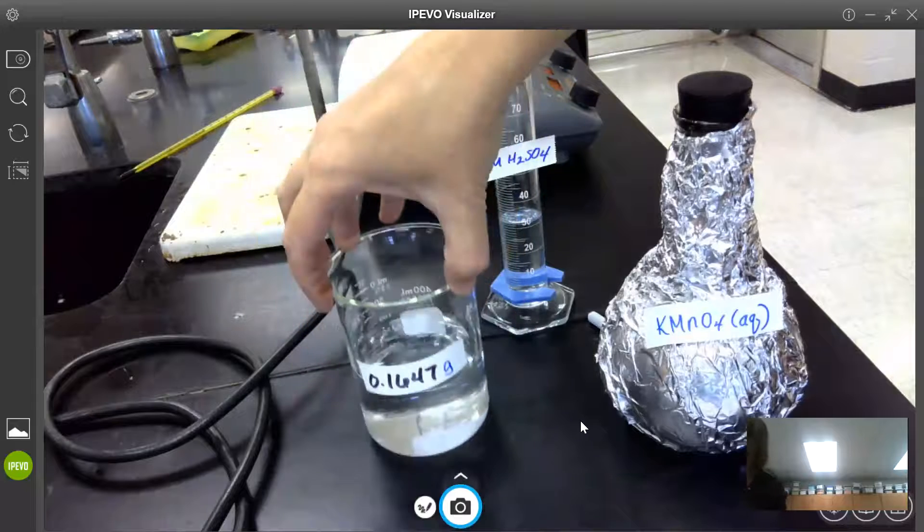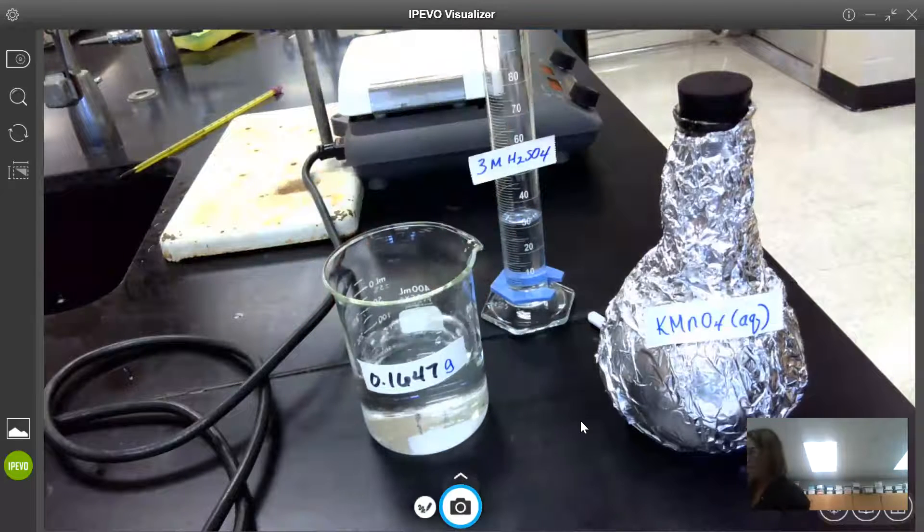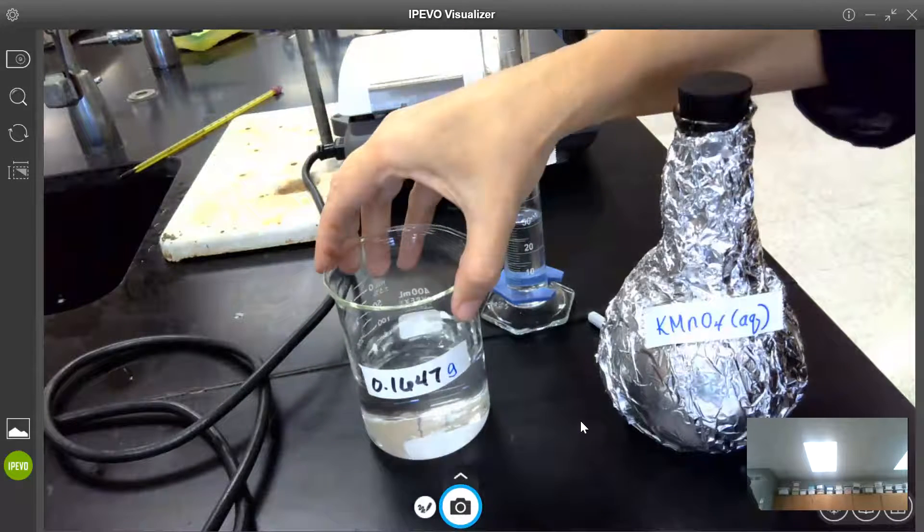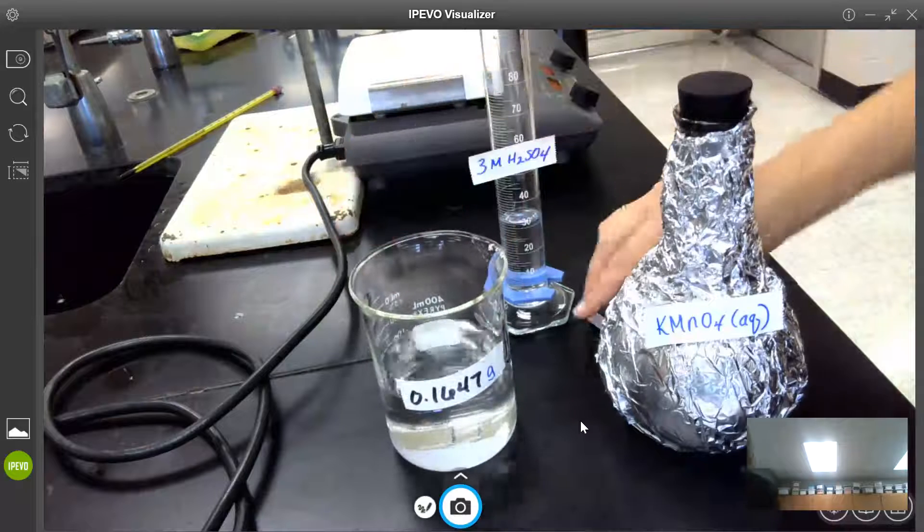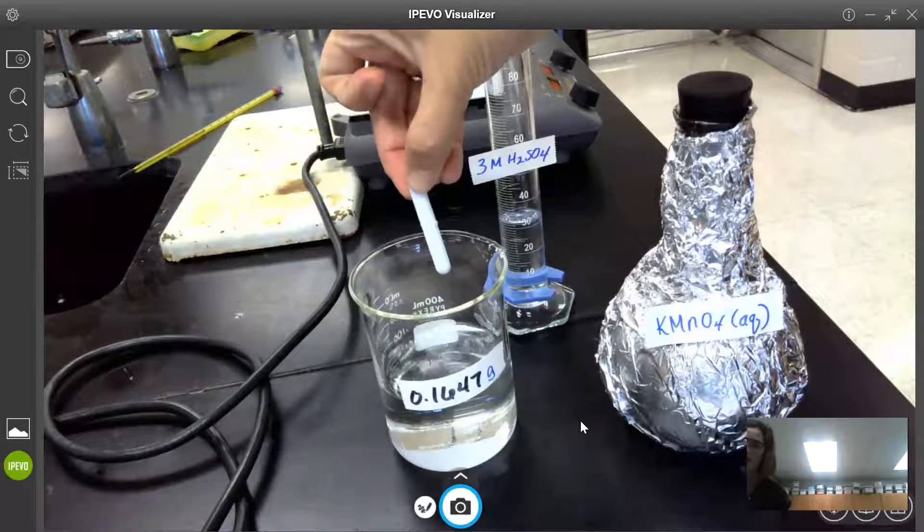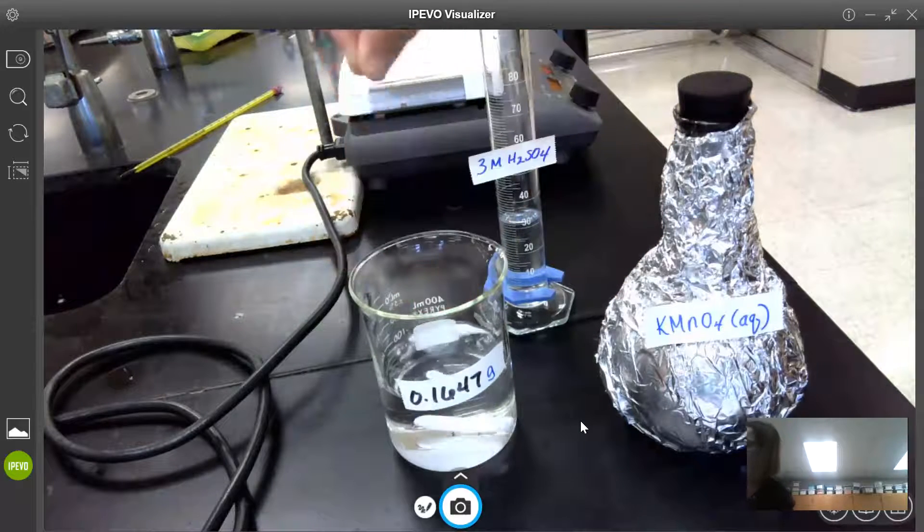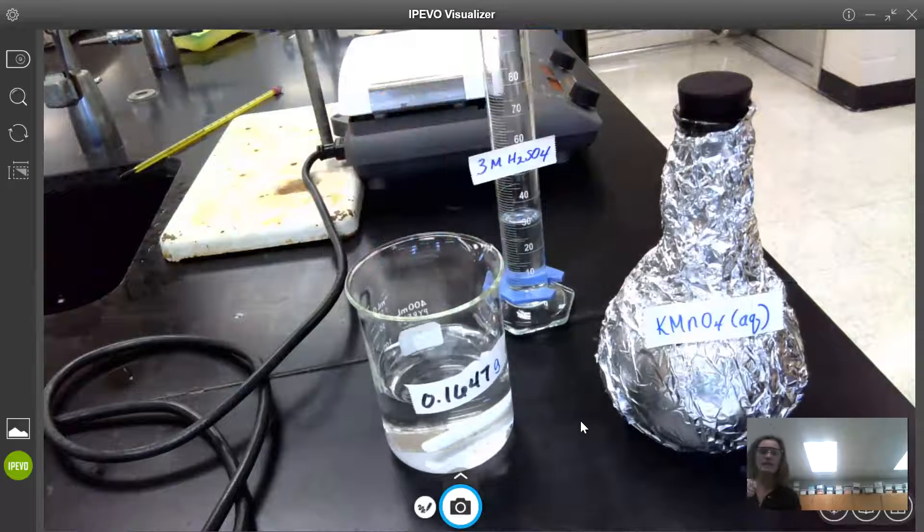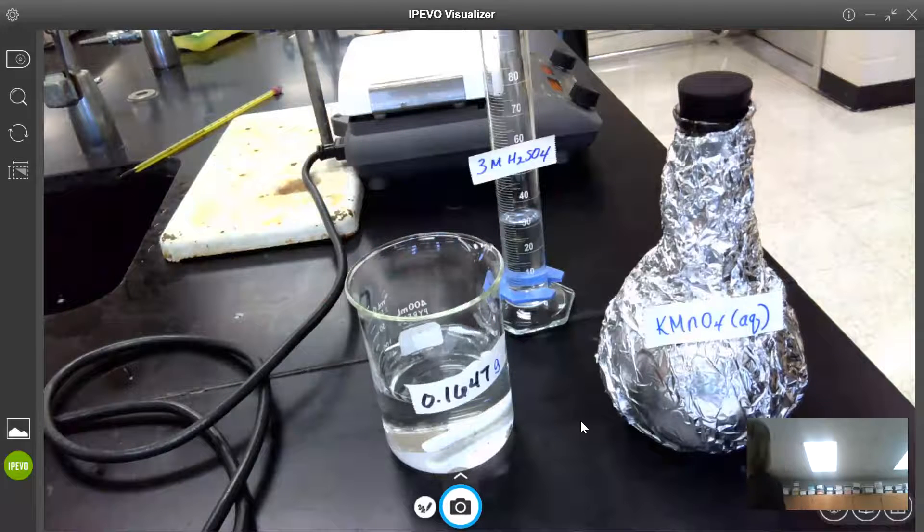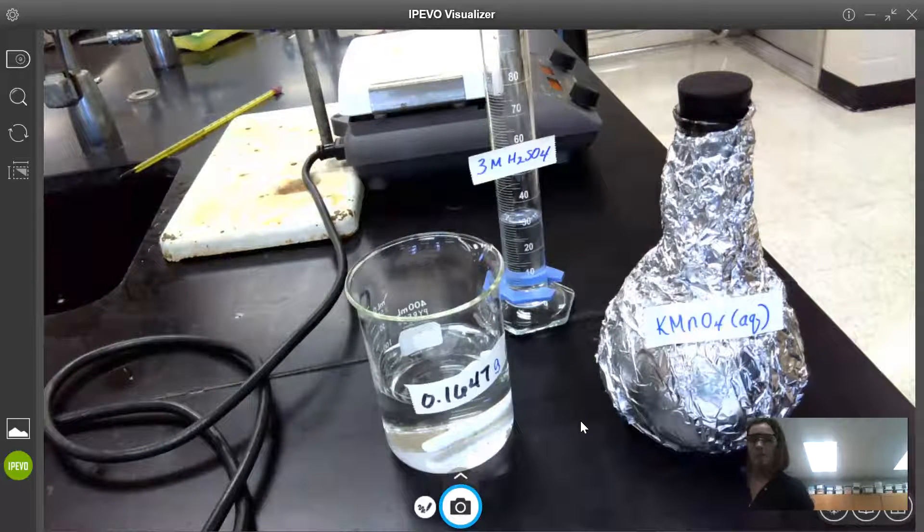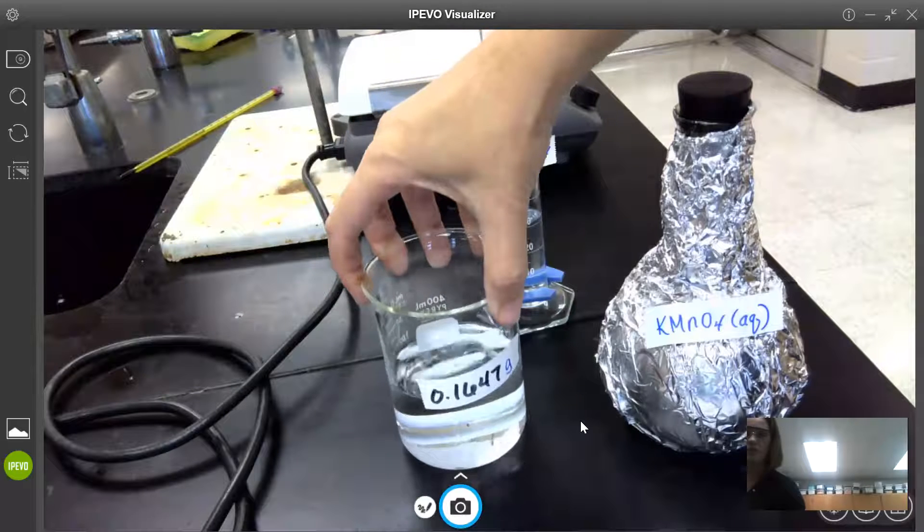You can see that most of the powder in there has started to dissolve in the water and to that I'm going to add a magnetic stir bar and I'm going to place this on a stir plate hot plate in order to begin our titration.